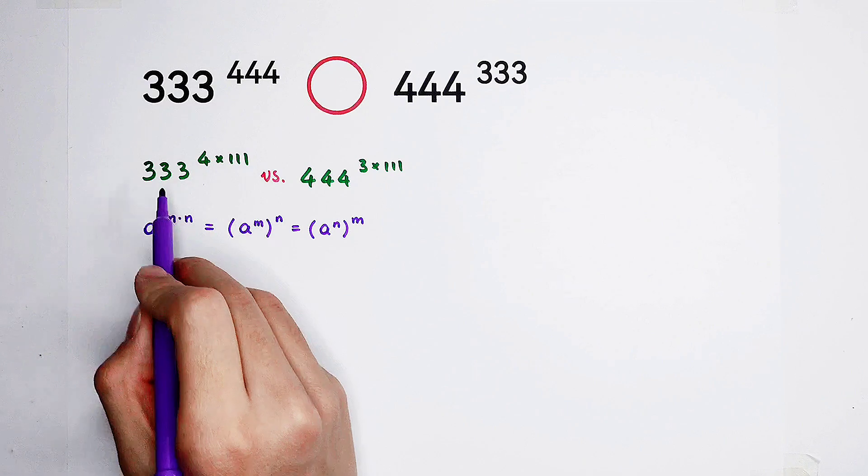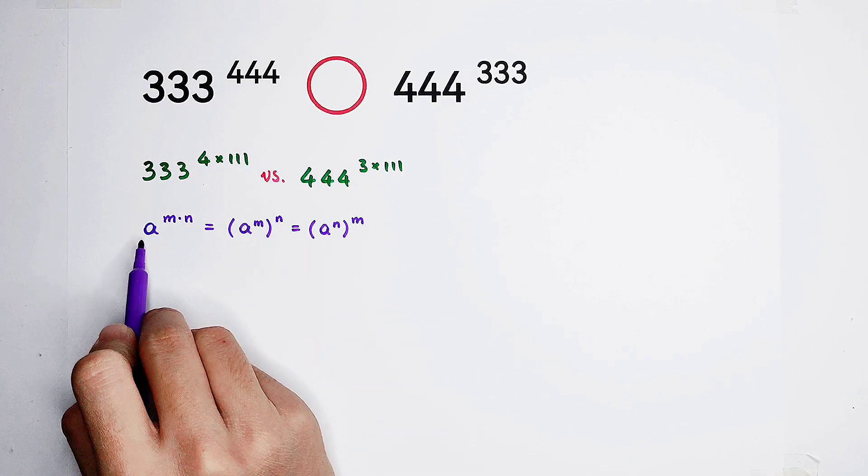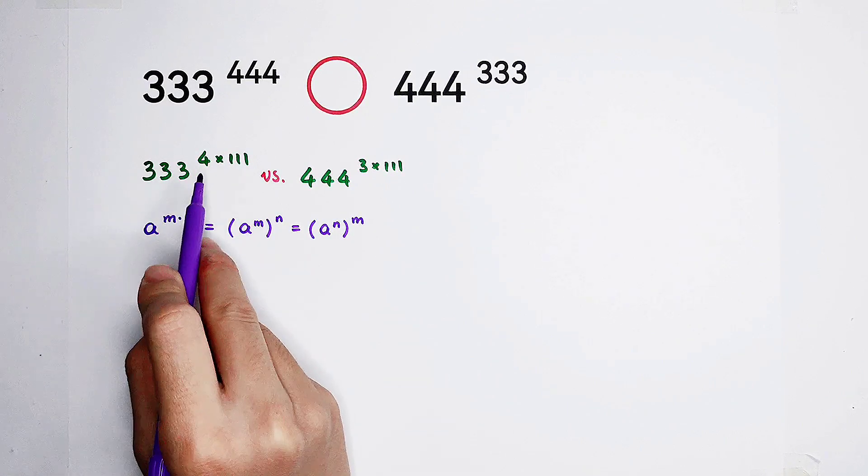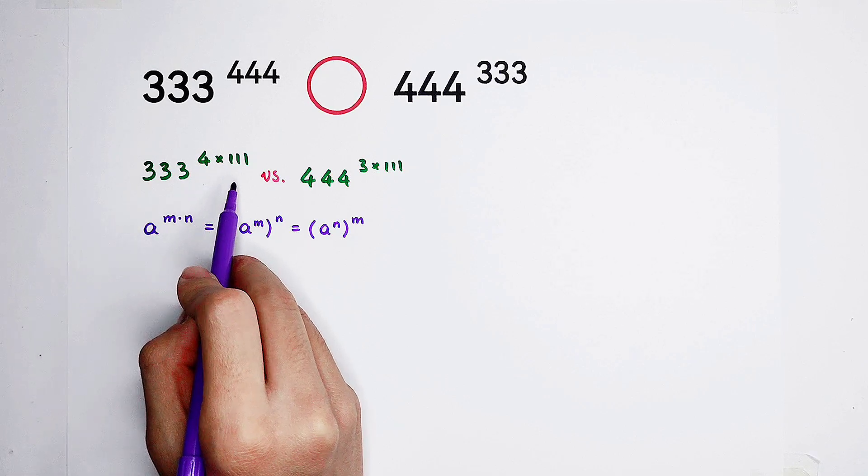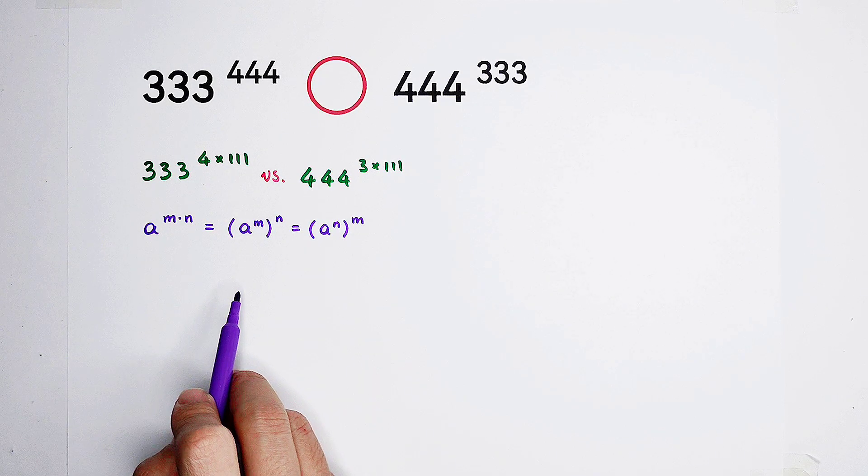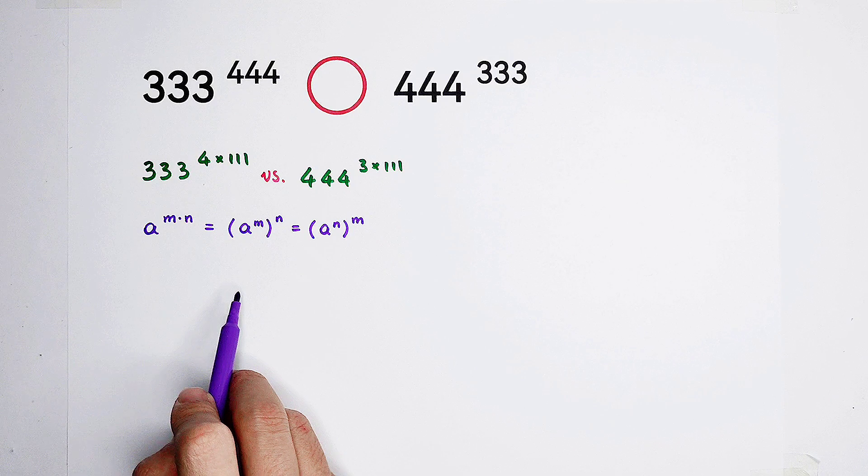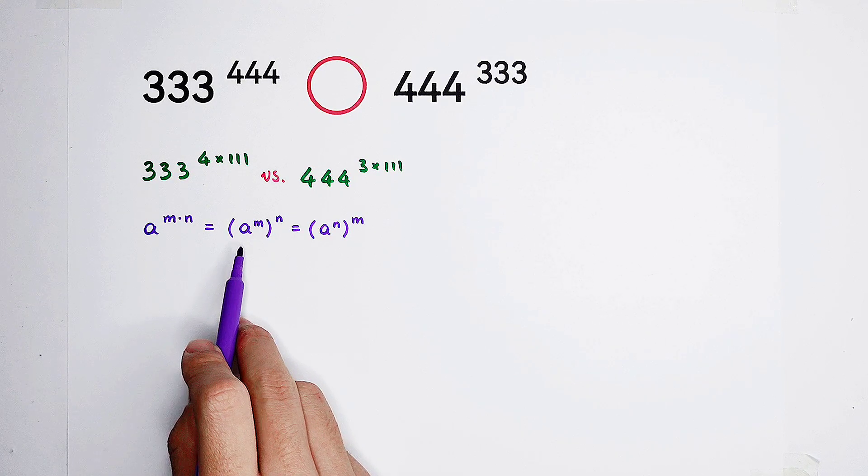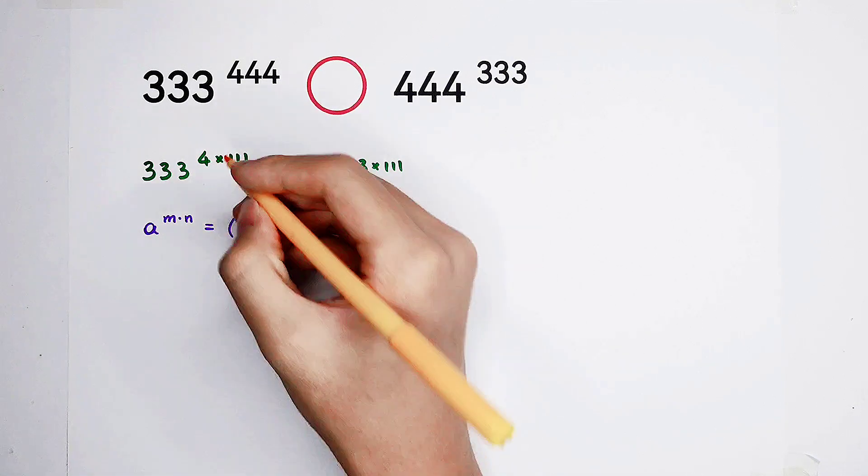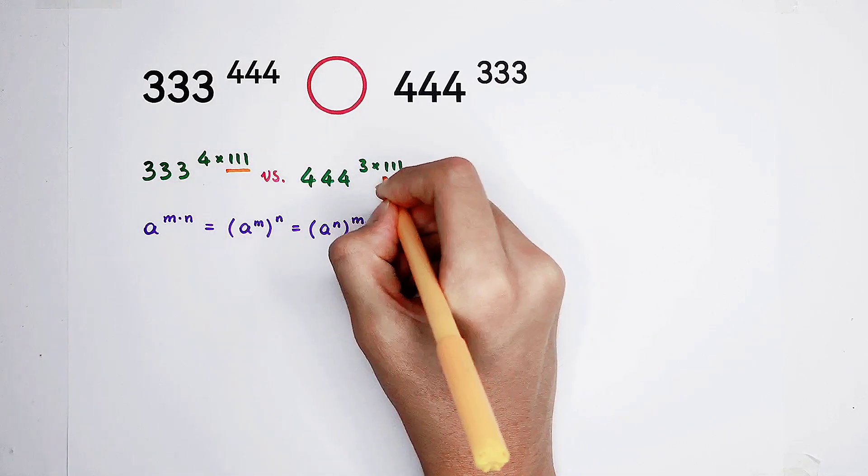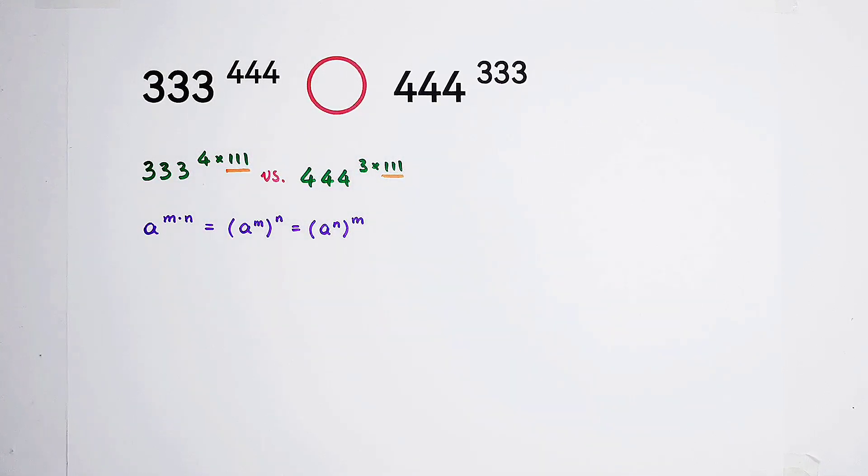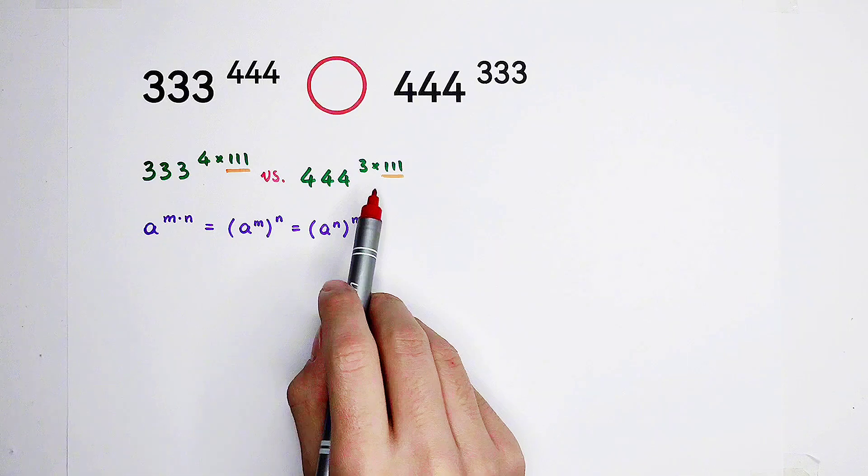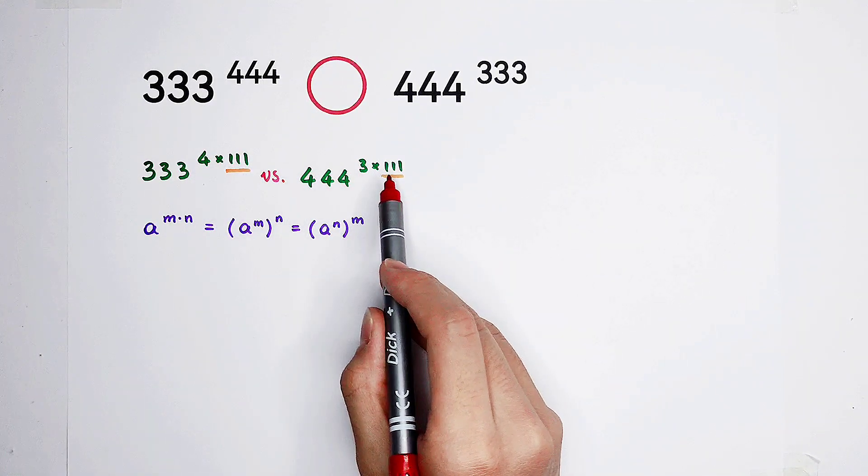Okay, then, here is, of course, a is 333, m is 4, n is 111. So now we can use which one? Of course, we should use the second one. Because you can see, here appears 111, and here as well.